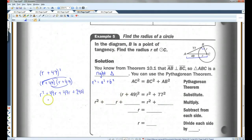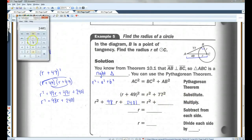So I'm going to have R squared plus 49R plus 49R plus 49 squared, which is 2401. I'm going to go ahead and write this in here. So R squared. Oh, there, they have it already simplified. So 49 plus 49, that gives me 98. So R squared plus 98R plus 2401 equals R squared plus 77 squared, 5929.